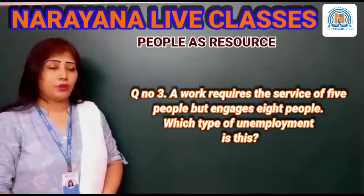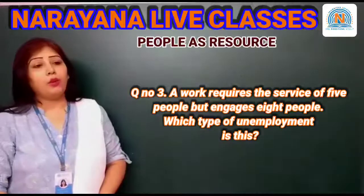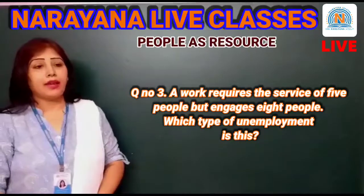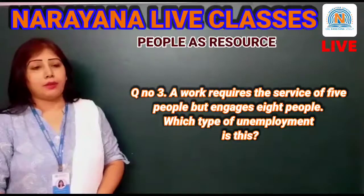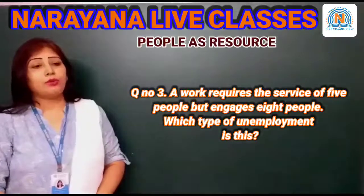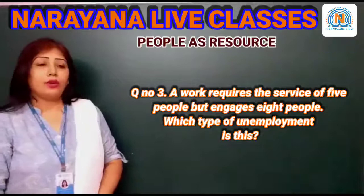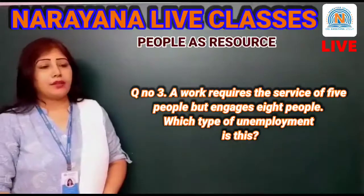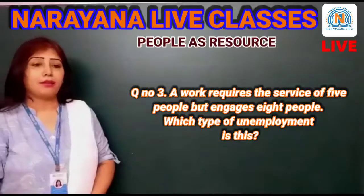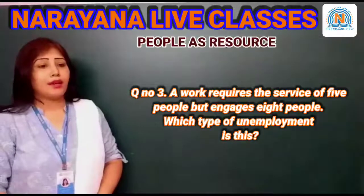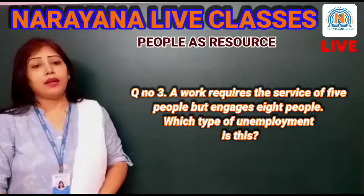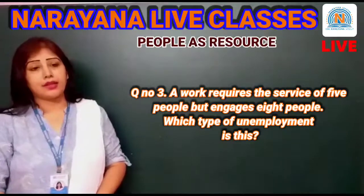Question number three: A work requires the service of five people but engages eight people. Which type of unemployment is this? When only five people are required and eight are engaged, it is known as disguised unemployment, as the three extra people represent disguised unemployment.